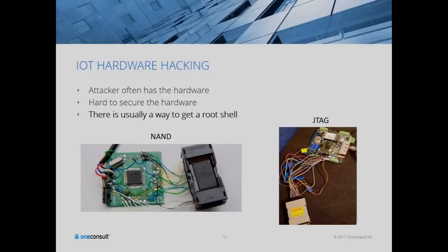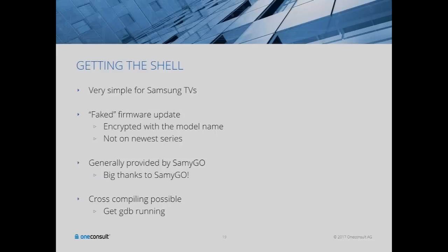When the changed program starts, you have your code in there, and it will create reverse shells or listen on a port for an incoming connection. Banks and similar make this much harder with TPM chips and modified CPU code, but nobody in IoT currently has the money for that. The easiest way here is to fake a Samsung update, especially with slightly older models. Samsung updates are encrypted with the model name itself — you decrypt with the model name, change it, re-encrypt, and send it as a Samsung update. This is how the SemiGo community does it.